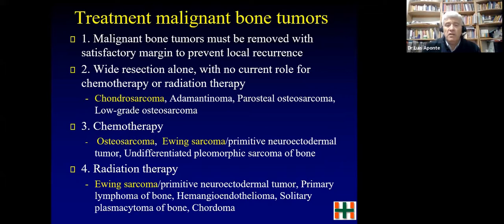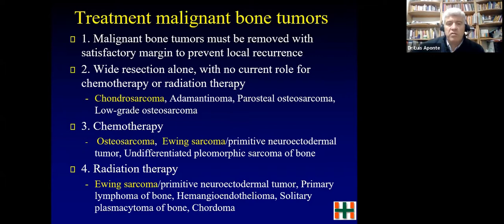Second, resection plus chemotherapy — the treatment of choice for osteosarcoma and Ewing sarcoma, and also for UPS of bone. Third, radiation therapy — the most important indication is Ewing sarcoma. You can also treat lymphoma, langerhans cell histiocytosis, or plasmacytoma with radiation. To summarize: chondrosarcoma gets resection only; osteosarcoma and Ewing sarcoma get chemotherapy plus resection; Ewing sarcoma may also get radiation.